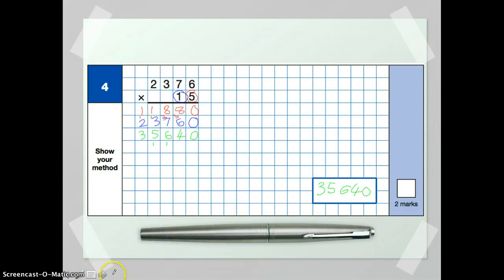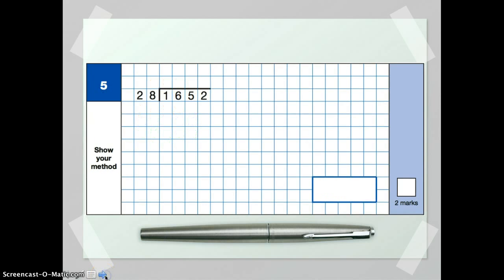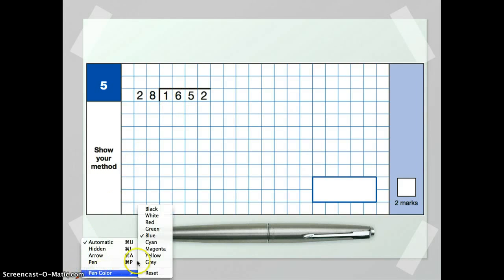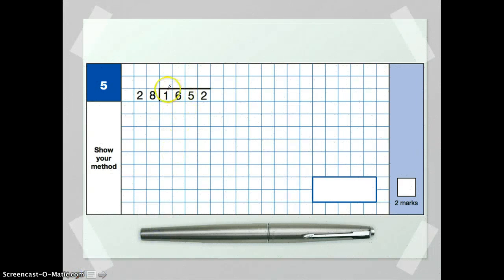Let's look at one more example for the arithmetic. Just like the previous one, this one also says show your method, giving you two marks. So it's expecting you to show the bus stop method and a valid way of doing long division. One way you can do it is to work out multiples of 28 and subtract those underneath, keeping track of how much you subtracted each time. My preferred way here is to count up in 28s.